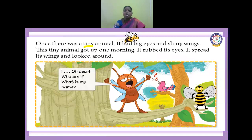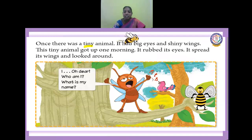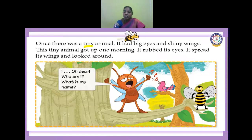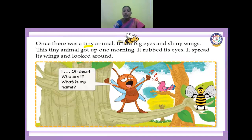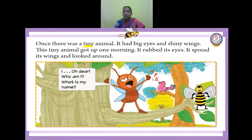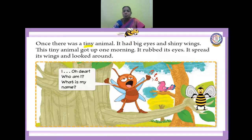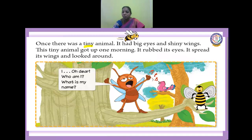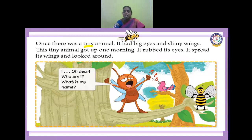Once there was a tiny animal, and it had big eyes and shiny wings. This tiny animal got up one morning. It rubbed its eyes, spread its wings, and looked around — moving up and down and seeing. Oh dear, who am I? What is my name? Actually, it forgot its name. And it is asking: who am I? What is my name?